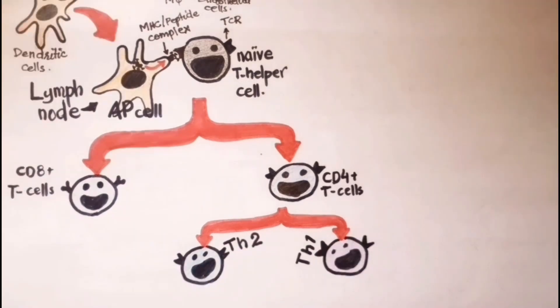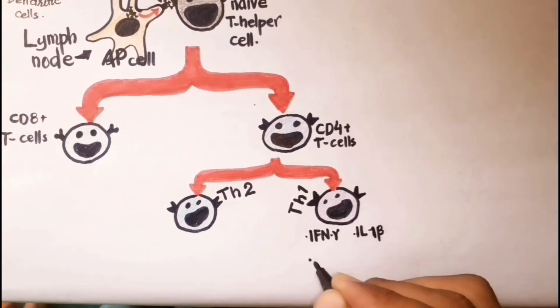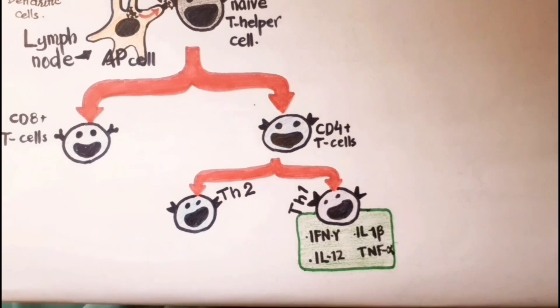T helper type 1 cells drive cellular immunity and release pro-inflammatory cytokines such as interferon-gamma, IL-1 beta, IL-12, and TNF-alpha. These cytokines exert host antiviral responses in different ways. Interferon-gamma is particularly important because it can inhibit viral replication and enhance antigen presentation, while TNF-alpha triggers immune cell localization at infection sites and promotes apoptosis.